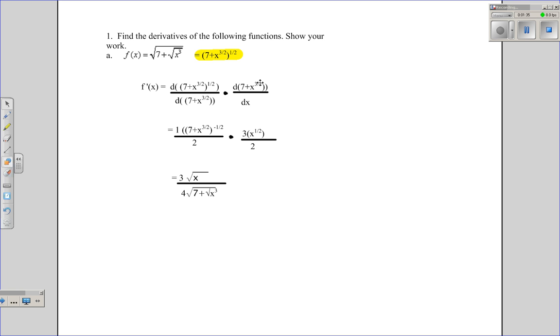The derivative of this inside function is again by another application of the power rule. The 7 is a neglected element, so it's just basically the derivative of x to the power of 3 halves. And that, as we know by now, is just the coefficient 3 over 2, that's the exponent, and then you subtract 1 from the exponent. So it's 3 over 2, x to the 1 half.